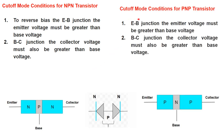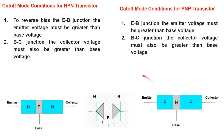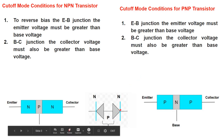So what are the cutoff mode conditions for the PNP transistor? Remember one thing: you always have to keep in mind the reverse bias conditions. If you want to reverse bias a simple diode, the first condition is that the negative side must be at high potential and positive side must be at low potential. Definitely this PN junction will be reverse biased — and this applies whether it is an NPN transistor or PNP transistor.